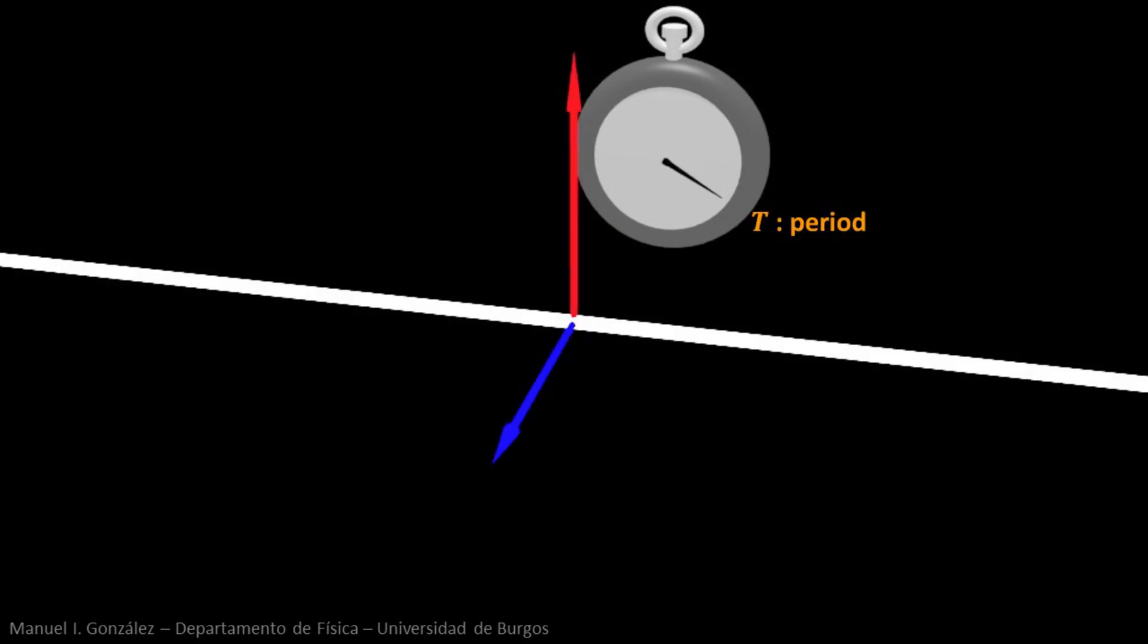We call frequency of the wave the number of oscillations that the fields complete in a second. This definition implies that the frequency is the inverse of the period.